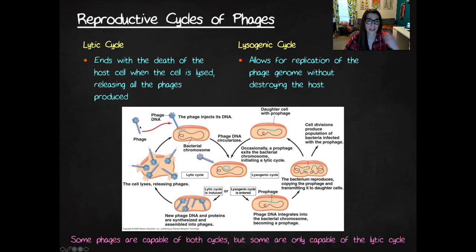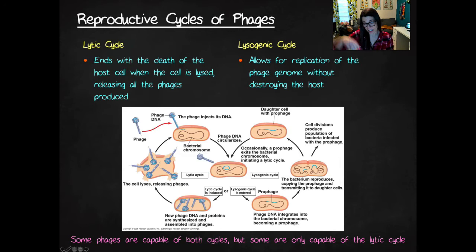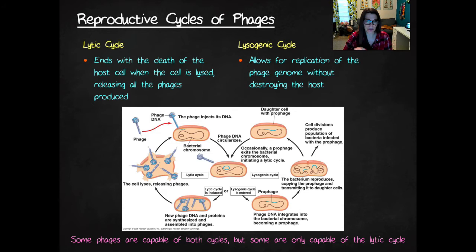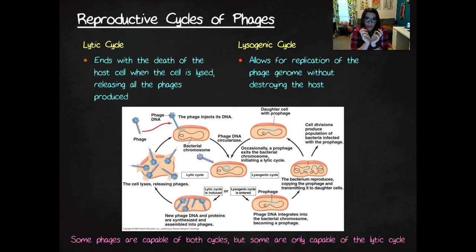In the lytic cycle, the first thing that always happens is the virus has to attach itself to the host cell — in this case, a bacterial cell. The bacteriophage injects, like a syringe, its nucleic acid from its polyhedral head down through its helical body into the cell, just like a syringe. Then the capsid — the polyhedral and helical part — just falls off. But the nucleic acid, the genome, is actually inside the cell now. Bacteria have just one big circular chromosome, so the viral DNA forms its own little circle.